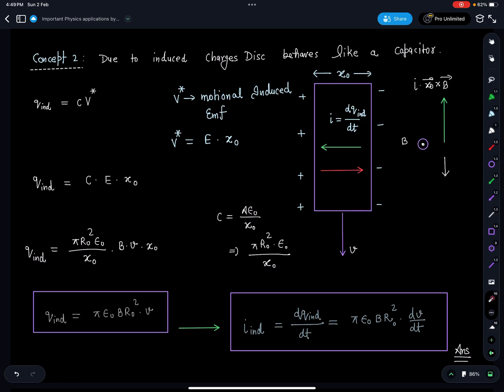Substituting here, E value is Bv at that given instant and this is x₀. If this charge is changing, I can write the corresponding current which is flowing. More and more positive charge develops this side and more and more negative charge this side, so direction of current is this way. This induced current i = dq/dt can be found by differentiating the q_induced expression, which gives πε₀Br²(dv/dt).